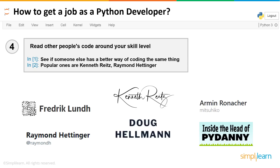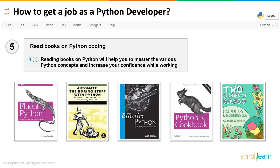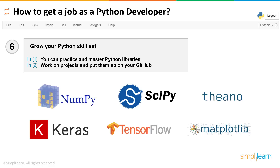Tip number five: read books on Python coding. You might already know quite a bit of Python — in fact, if you're looking for a Python developer job, there's a good chance you're an advanced coder — but nothing beats books. Some of the very popular and well-known books for Python are Fluent Python and Automate the Boring Stuff with Python. Fluent Python is a great book to start with, as it gets your Python concepts really strong, so you'll have not only great skills but also the perfect way to portray them.